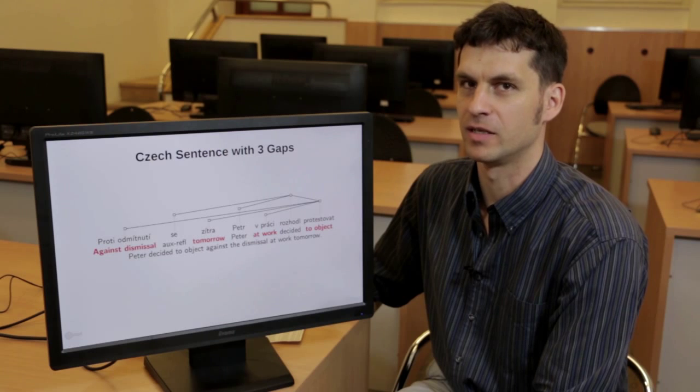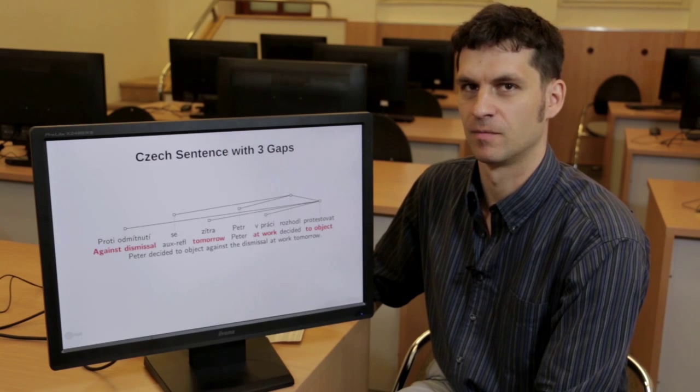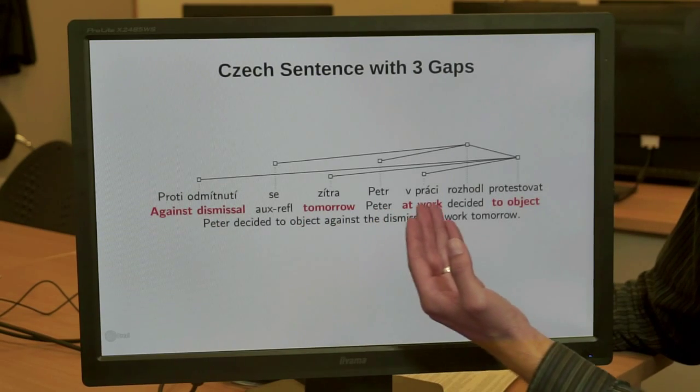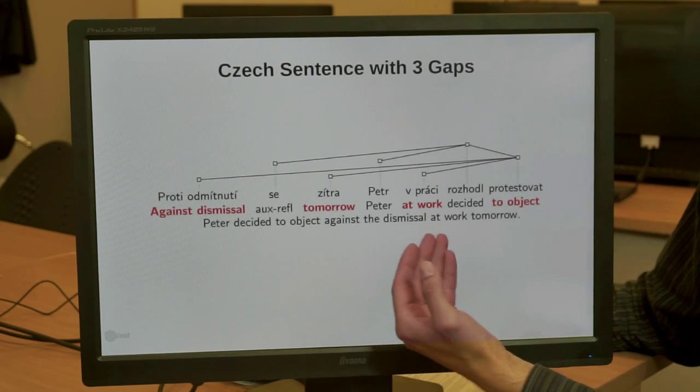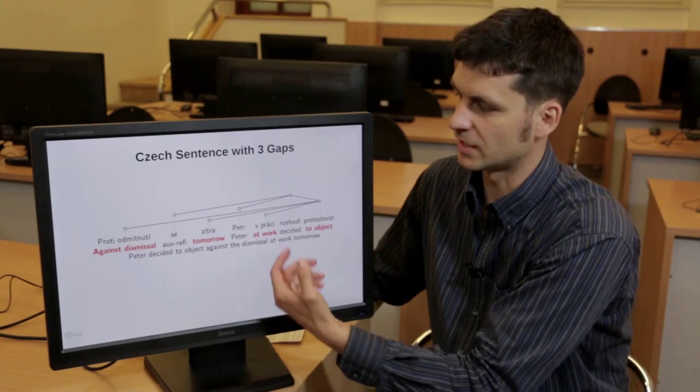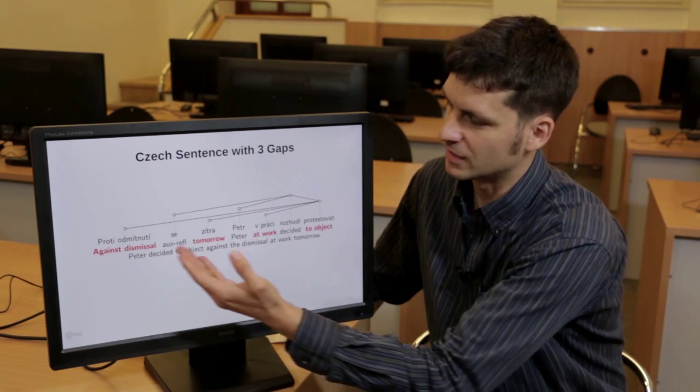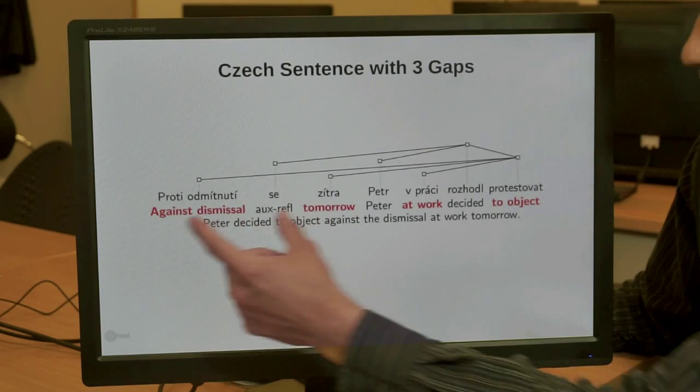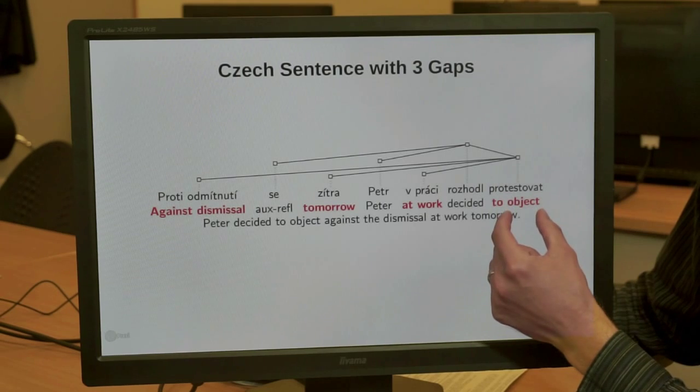The point is that some, if not many, natural languages cannot be adequately described by constituency trees. Take this example sentence in Czech: Proti odmítnutí se zítra Petr v práci rozhodl protestovat—Peter decided to object against the dismissal at work tomorrow. The sentence in Czech sounds perfectly natural to a native speaker, but in this syntactic analysis, there are three gaps in the sub-tree of 'to object': against dismissal, tomorrow, at work.